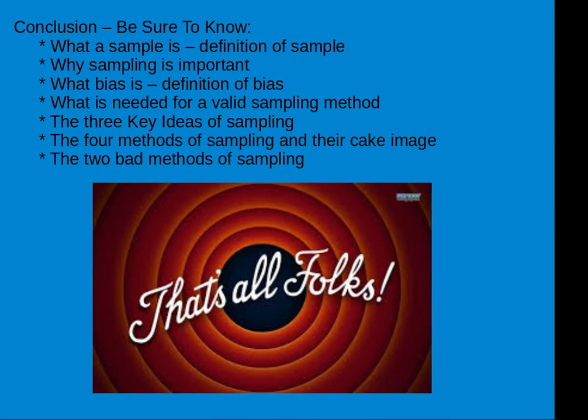In conclusion, be sure you know the following: what a sample is and its definition, why sampling is important, what bias is and its definition, what is needed for a valid sampling method, the three key ideas of sampling about the soup and noodles, the four methods of sampling and their cake images, and the two bad methods of sampling. Okay, thanks very much. That's all. Bye-bye.